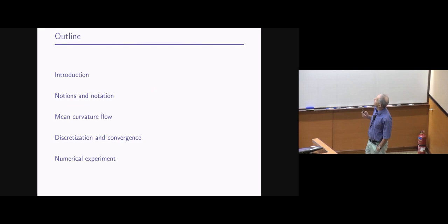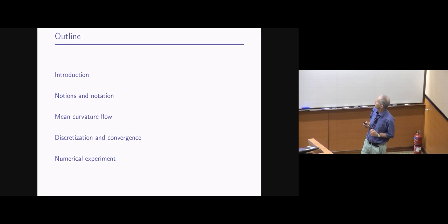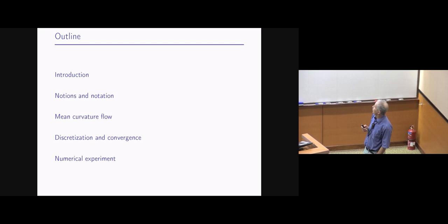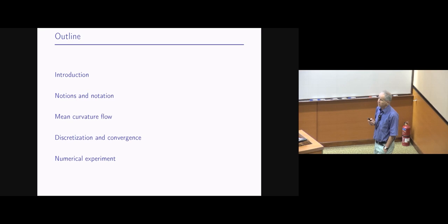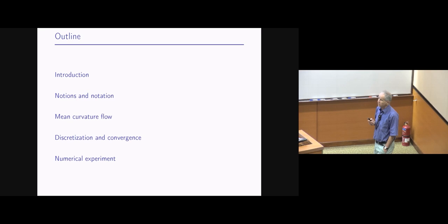The outline is very short. I will give an introduction about what kinds of problems we consider, first informally, then with some rigor and necessary notation. I will mainly concentrate on a particular geometric flow known as mean curvature flow, tell you about its discretization and convergence, and end with some numerical experiments.